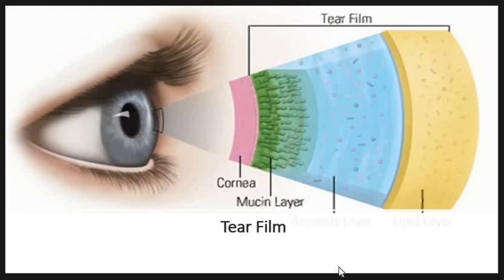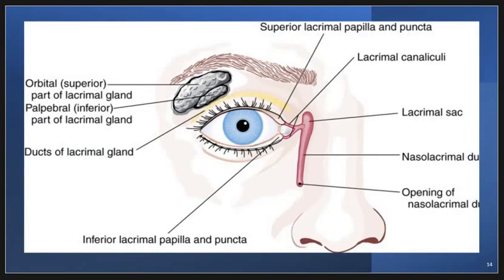The tear film covers the ocular surface and is important for protecting the eye, lubricating the ocular surface, maintaining a smooth surface for light reflection, and preserving the health of the conjunctiva and avascular corneum. We also have lacrimal glands in the eye. The lacrimal gland is a bilobed tear-shaped gland with the primary function of secreting the aqueous portion of the tear film. It is located above the eye in the anterior superior temporal orbit within the lacrimal fossa of the frontal bone. It is part of the nasolacrimal system to drain tears from the ocular surface to the lacrimal sac and ultimately the nasal cavity. Blockage of the nasolacrimal system can cause tears to overflow the eyelid and down the cheek — a condition called epiphora.